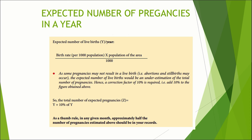We need to know about the expected number of pregnancies in a year. This is calculated using the birth rate: total number of births per thousand population multiplied by the population and divided by 1000 gives the expected number of live births per year. Since some pregnancies may not result in live births — abortions and stillbirths may occur — the expected number of live births would be an underestimation of total pregnancies. Hence, a correction factor of 10% is required. Total expected pregnancies equals total live births plus 10% of that number. As a thumb rule, in any given month, approximately half the estimated number of pregnancies should be in your records.